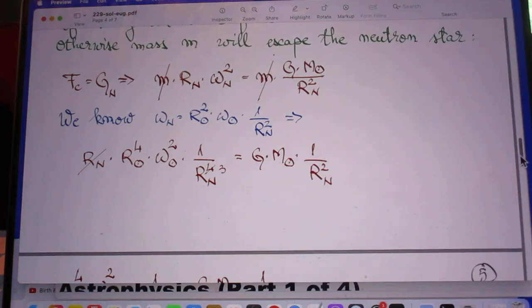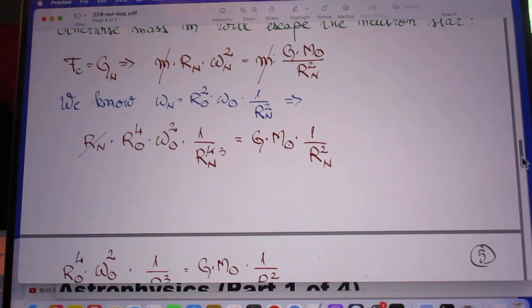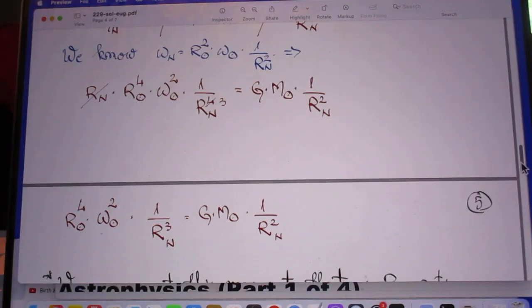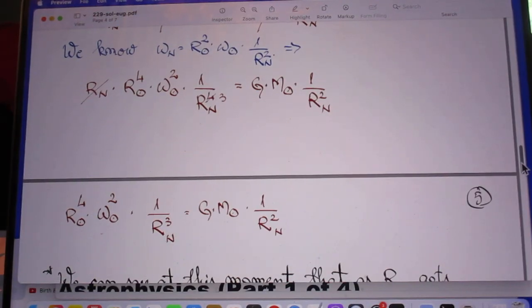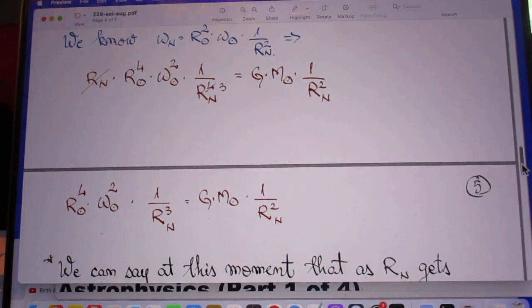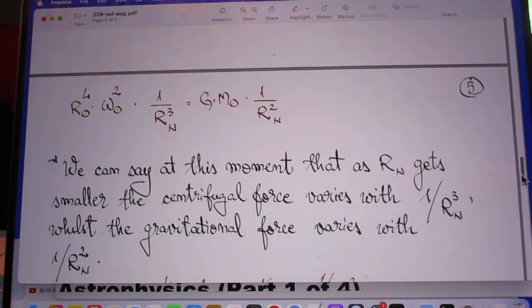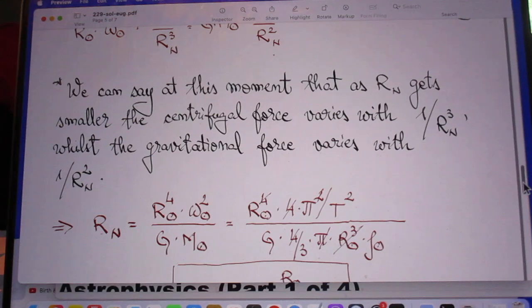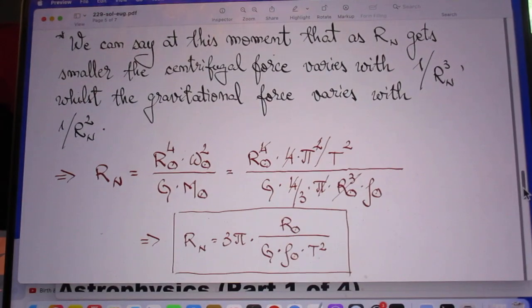So here requires now that when the two are the same, the smallest radius that is then possible can be given that the centrifugal force is no larger than the gravitational force. We can say at this moment that as R gets smaller, the centrifugal force varies with one over R cube and the gravitational force with one over R square.